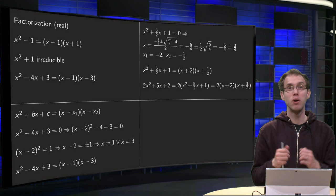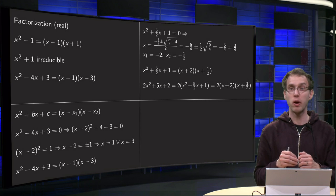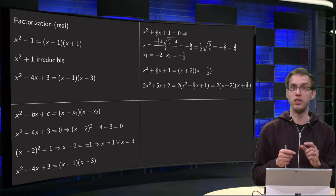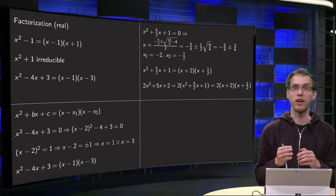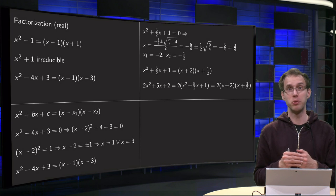So let's do a more complicated one, where it would be kind of annoying to complete the square, and where it would be hard to see a product of two numbers which equals 1 and a sum of numbers which equals 5/2. So what are we going to do then? Well, we need to find the zeros of the polynomial. Fortunately we have the quadratic formula for that.